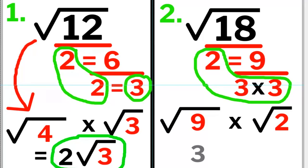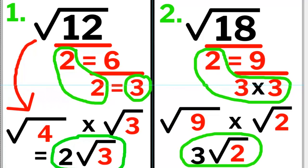The square root of 9 is 3, and we have the square root of 2. The final simplified answer is 3 times the square root of 2.